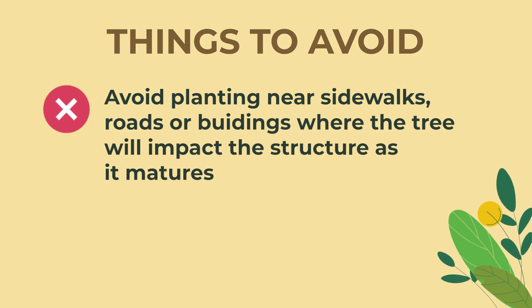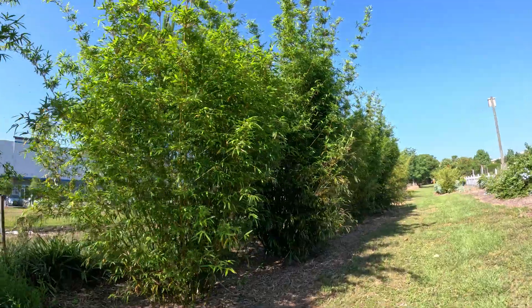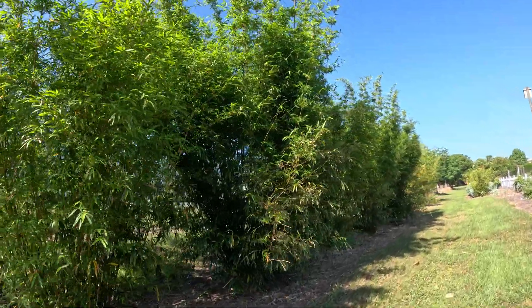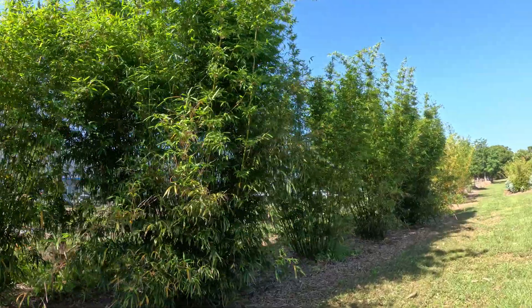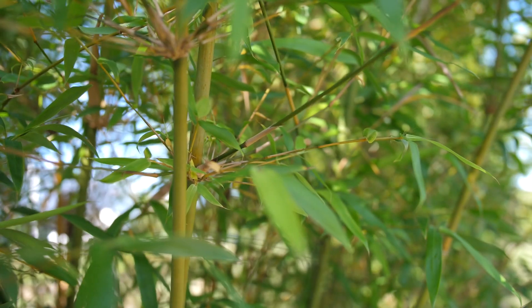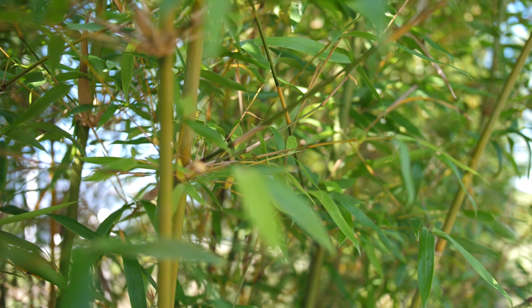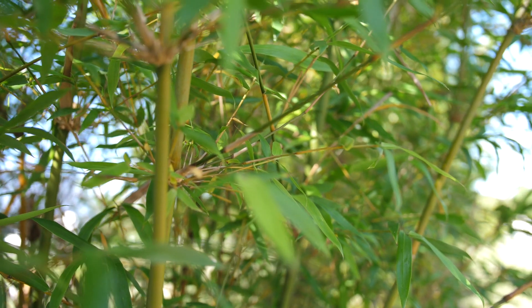Avoid planting near sidewalks, roads, or buildings where the tree will impact the structures as it grows into maturity. This is giant timber bamboo. This is not a compatible species for overhead utility power lines. We'd like a lower-growing dwarf species if you're going to plant bamboo. We want the more clumping and not the spreading species. Bamboo is a fast-growing species — it's hard to maintain and we do not want it around overhead utility power lines.